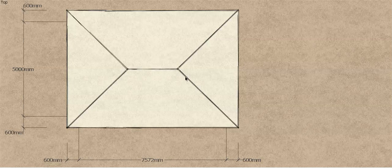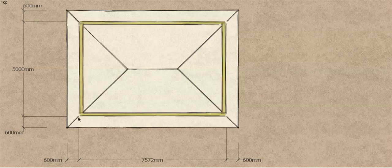In this case our building is 7 meters 570 long. We've got a 600mm eave overhang all the way around, and the span of our building — I'll just put the walls in so you can see — the outside of our timber frame, regardless of whether there's a brick in here or not, is 5 meters. That'll make my calculations nice and easy later on, and as I said, 600mm eave overhang all the way around.